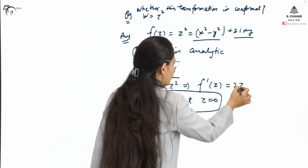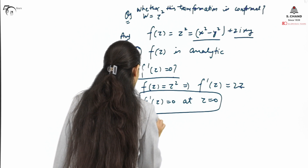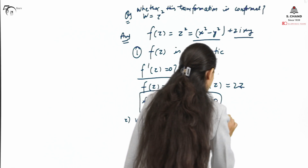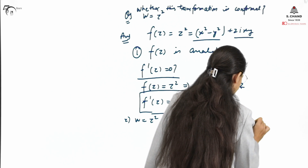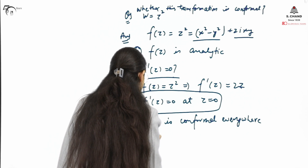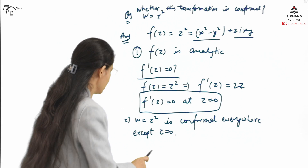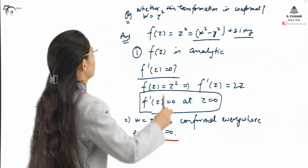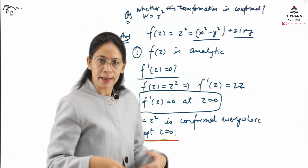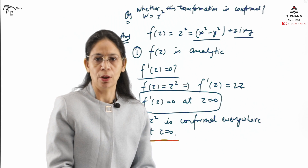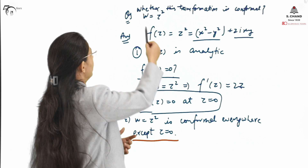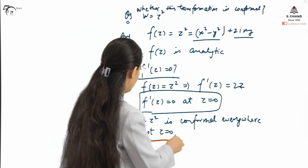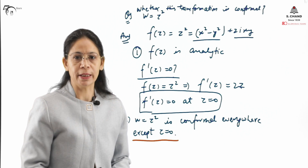Therefore, W equals Z squared is conformal everywhere except at Z equals zero. We must mention this point: it is not conformal at Z equals zero. If asked whether the transformation is conformal at Z equals zero, the answer is no. If asked where it is conformal, we write: W equals Z squared is conformal everywhere except Z equals zero.